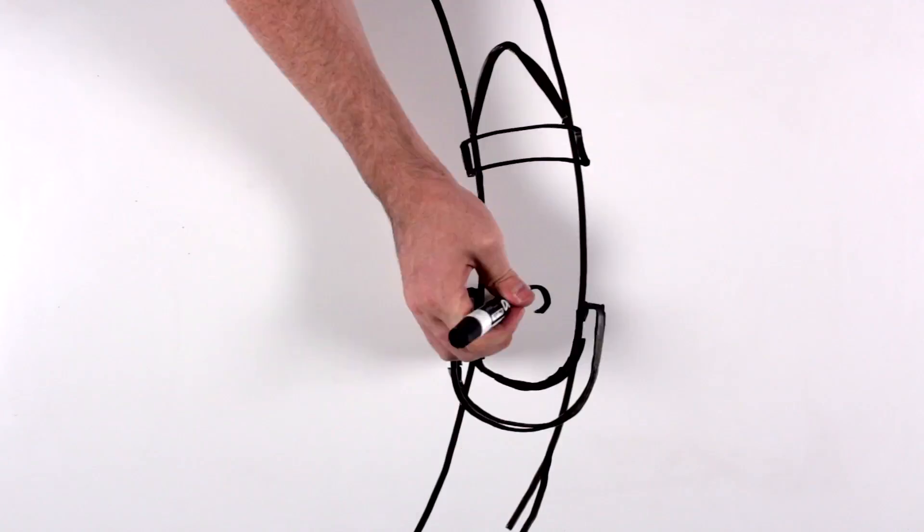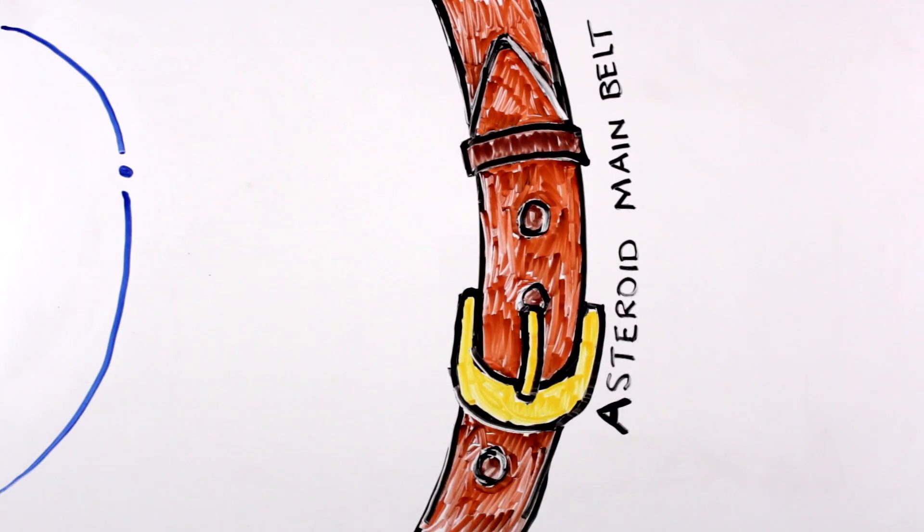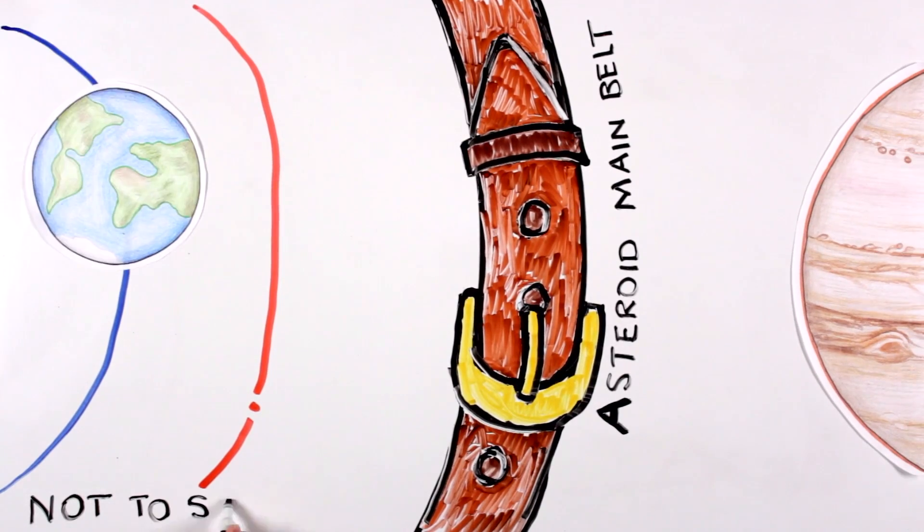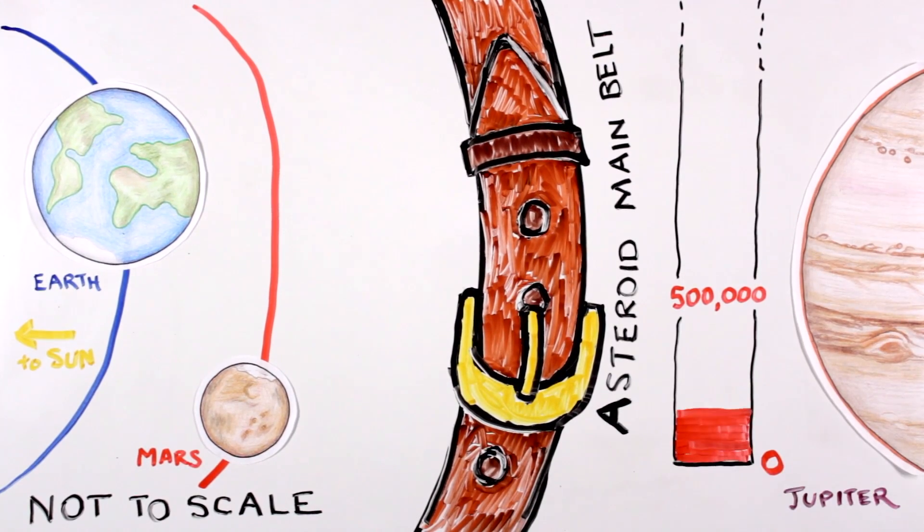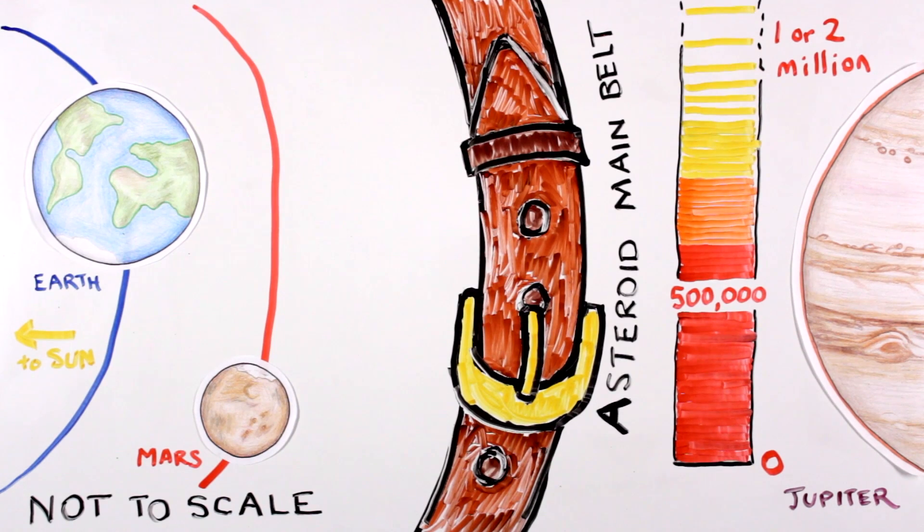Most asteroids orbit in the main belt, a region of the solar system between the orbits of Mars and Jupiter. Astronomers have already discovered over 500,000 asteroids, and scientists estimate that the main belt is home to one to two million objects larger than one kilometer.